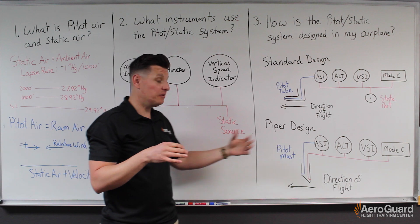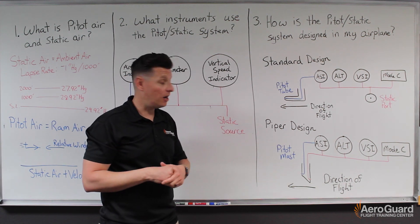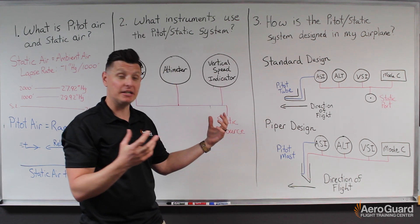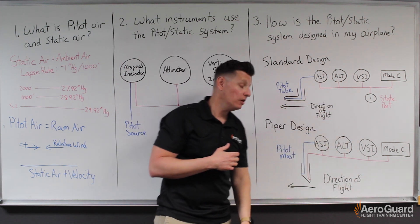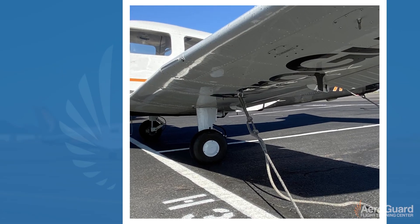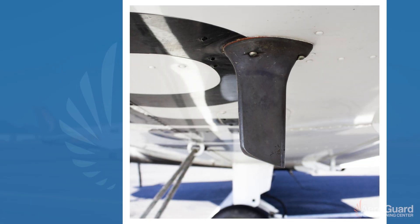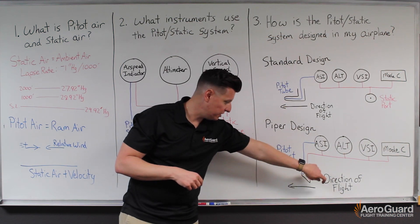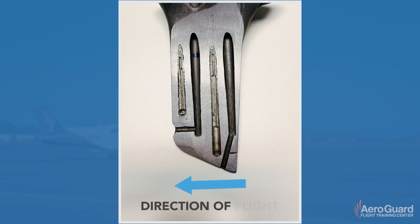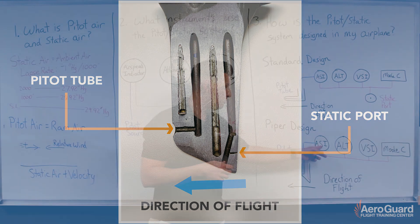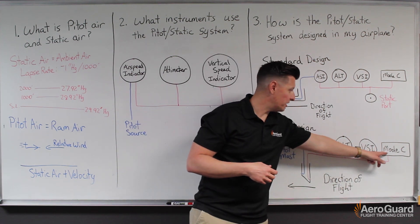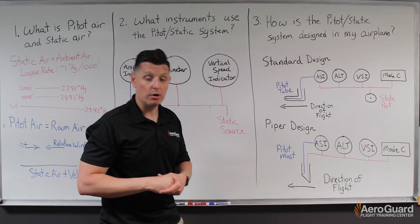The other design we see — specifically here at AeroGuard where we fly all Piper aircraft — is slightly modified. Instead of having a separate pitot tube and static port, it's all combined into one unit that hangs below the wing called a pitot mast. On the leading edge of this pitot mast there is an opening representing the pitot source or ram air source. On the trailing edge, on the back side of the pitot mast, there is the static port, which supplies static pressure to the airspeed indicator, altimeter, vertical speed indicator, and once again the mode C encoder for the transponder.